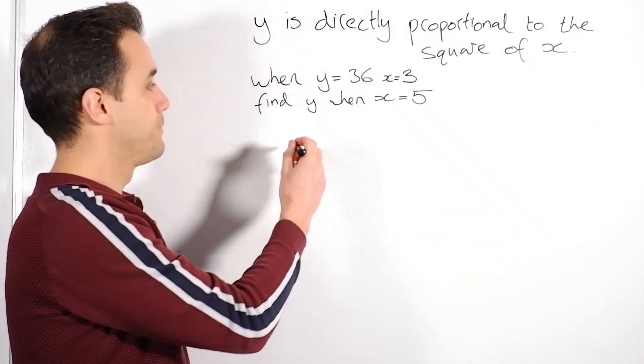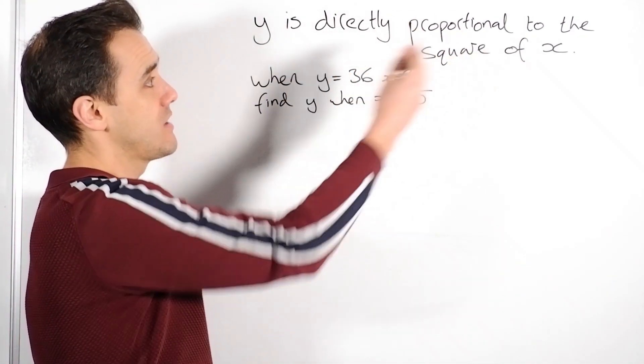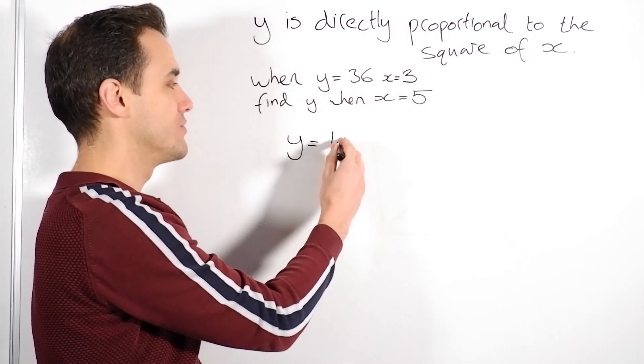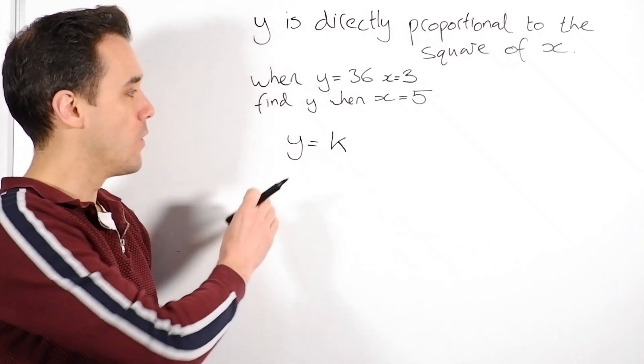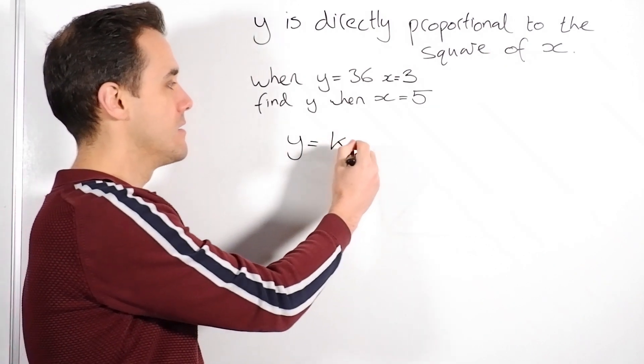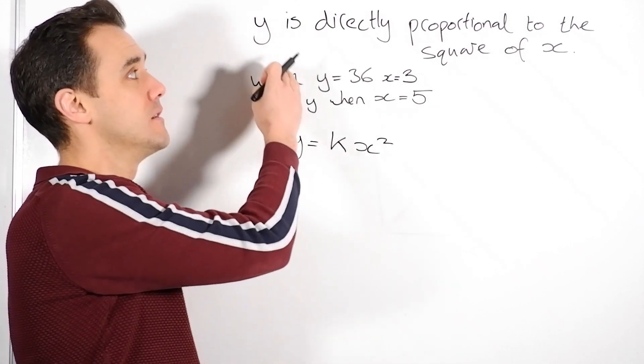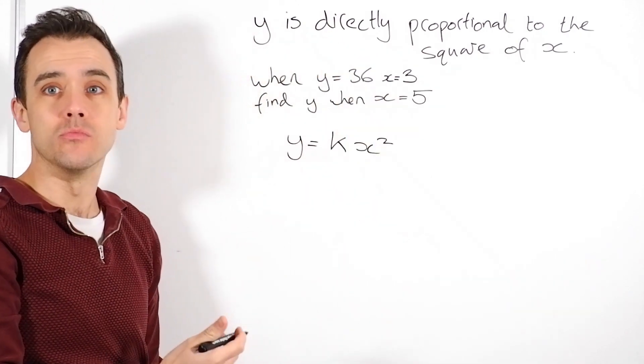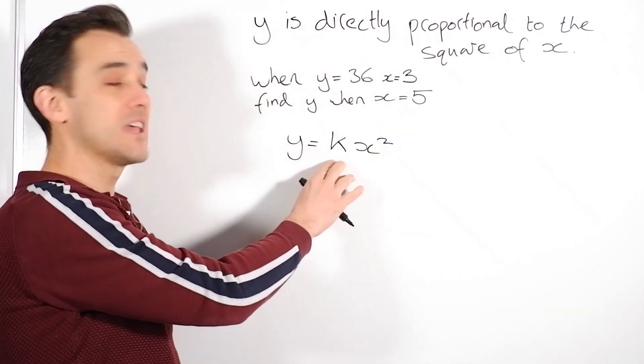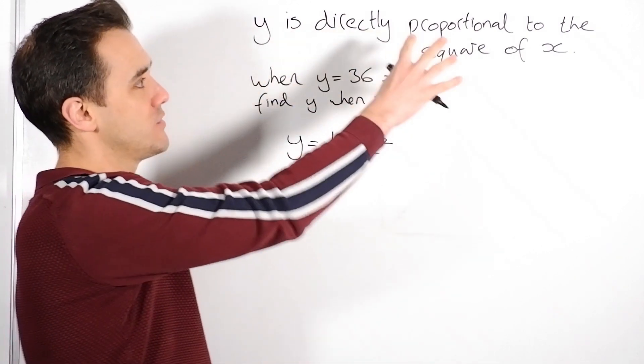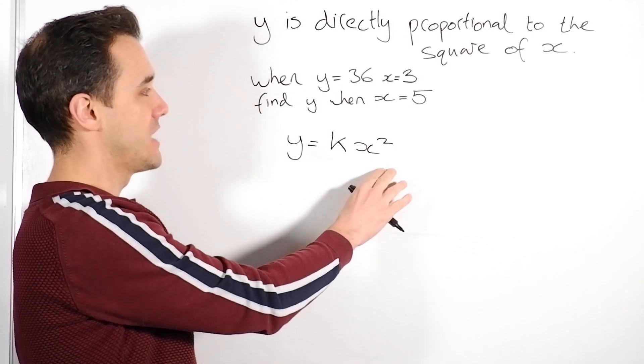So, always works the same. We have here, y is directly proportional to the square of x. That means y equals some constant, which we're going to call k. Y equals some constant k, multiplied by x squared. So if it had been p is directly proportional to the cube of r, we'd have written p equals k times r cubed. We just put whatever it's told us in the question there. So that's the first step.